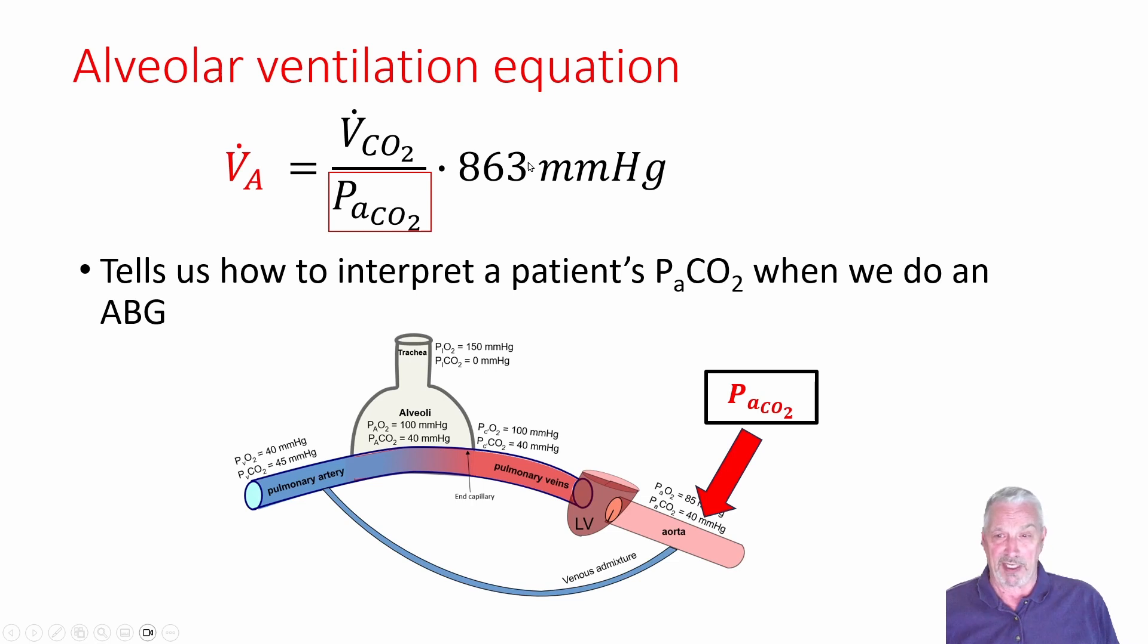863 millimeters of mercury is what you use if V̇CO2 and V̇A are both in mils per minute or both in liters per minute. And you use 0.863 if you express Alveolar Ventilation in liters per minute and carbon dioxide production in mils per minute. So I like to just say, let's assume the units are the same, whichever ones that you want to use. Then it's easy, we don't have to worry about decimal places.